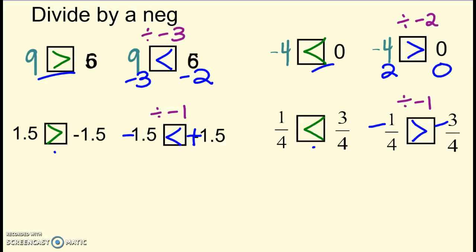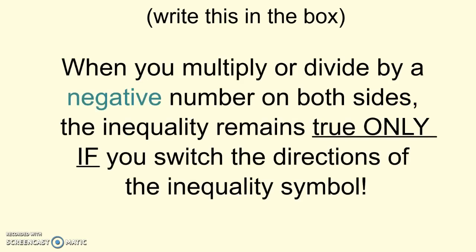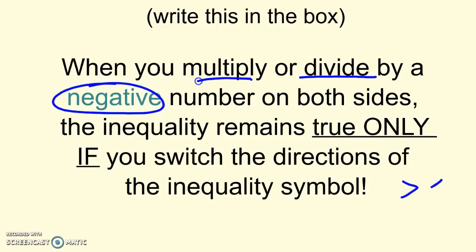That's what you need to write down in the box on your paper. When you multiply or divide by a negative on both sides, the inequality stays true only if you switch the direction of the inequality symbol. So if it was greater than, you have to switch it to less than. If it was less than, you switch it to greater than. And same thing — if it was greater than or equal to, now it's less than or equal to. It has to spin around and go the other way because that's what happens when you multiply or divide both sides by a negative.